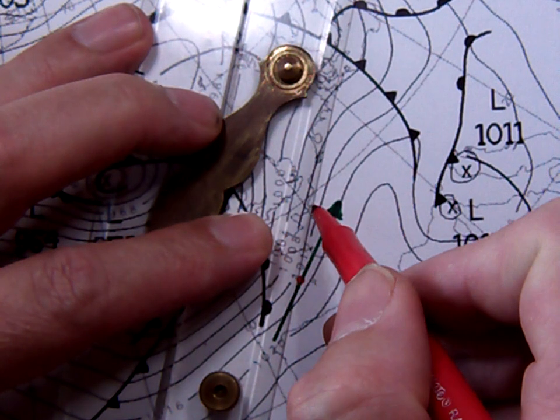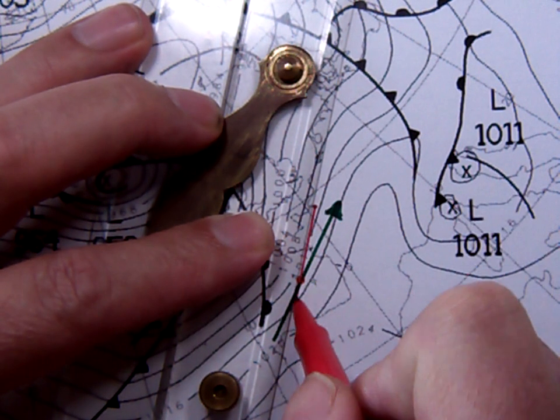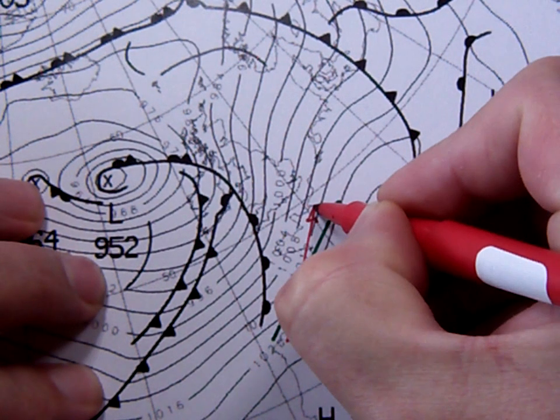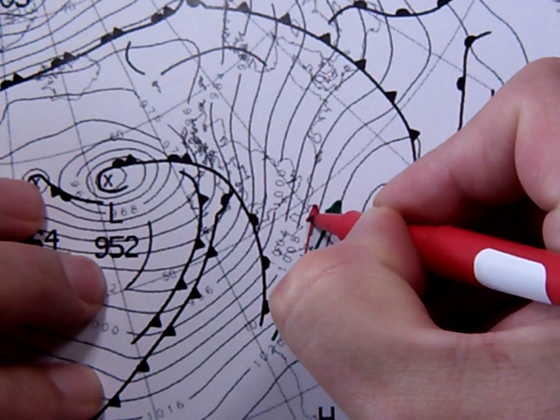Now as this is an estimate of wind speed, you don't have to get a protractor or anything out, you're just estimating 20 degrees. So that is the direction.